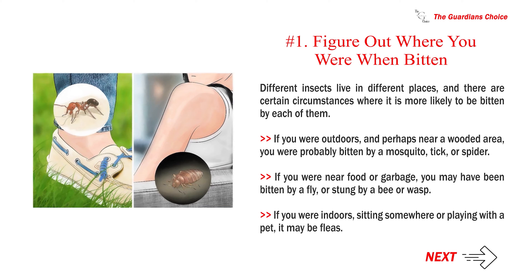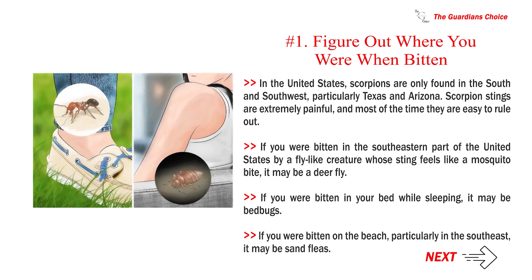If you were outdoors, and perhaps near a wooded area, you were probably bitten by a mosquito, tick, or spider. If you were near food or garbage, you may have been bitten by a fly, or stung by a bee or wasp. If you were indoors, sitting somewhere, or playing with a pet, it may be fleas. In the United States, scorpions are only found in the south and southwest, particularly Texas and Arizona.